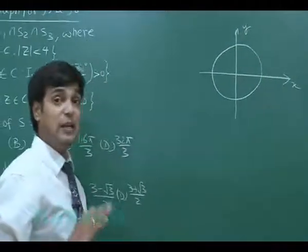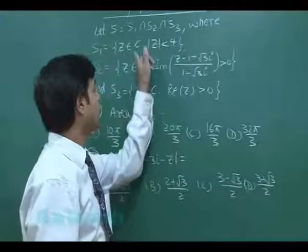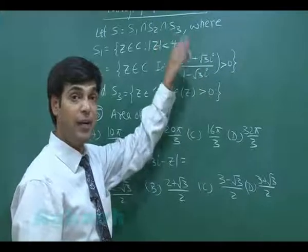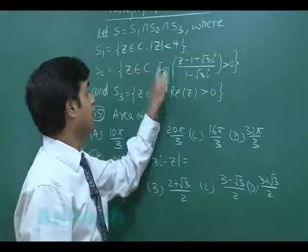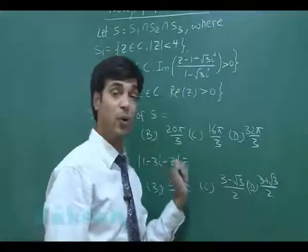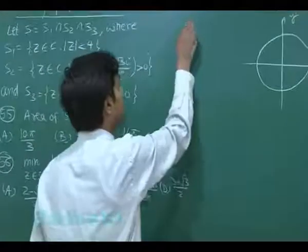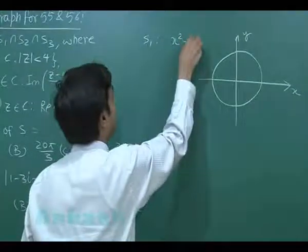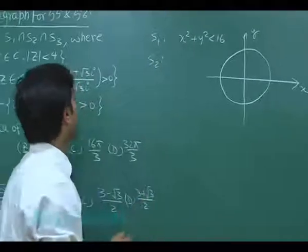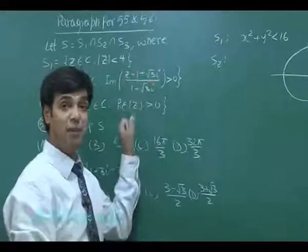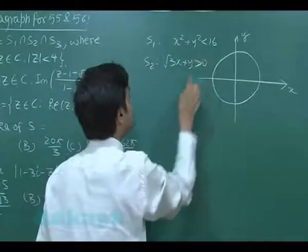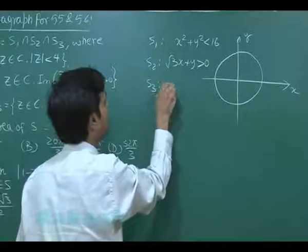S1 is {z ∈ ℂ : |z| < 4}, which is a circle centered at the origin with radius 4, giving x² + y² < 16. For S2, substituting z = x + iy and simplifying (z − 1 + √3·i)/(1 − √3·i), we get √3·x + y > 0. S3 is simply x > 0.